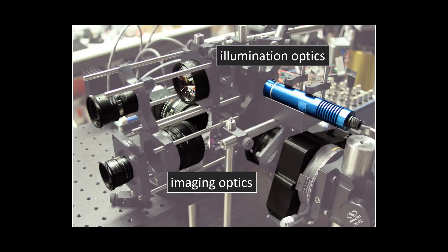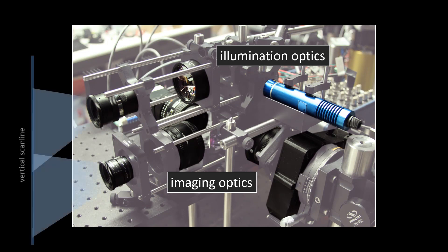Our prototype system consists of two modules, one to control the illumination and another for the sensors. The two modules are arranged such that a single vertical scanline is simultaneously illuminated and imaged by the system.